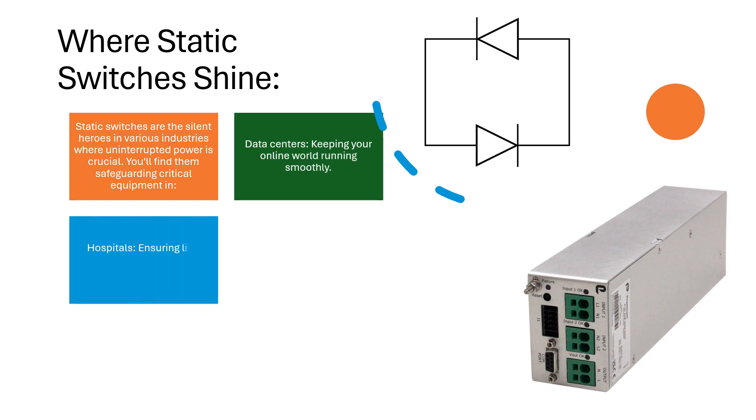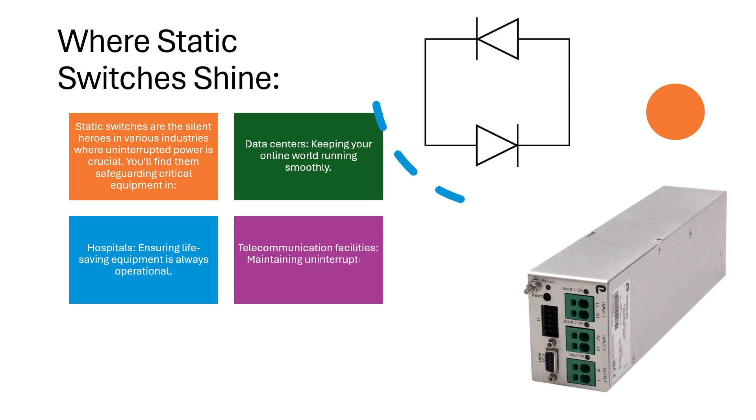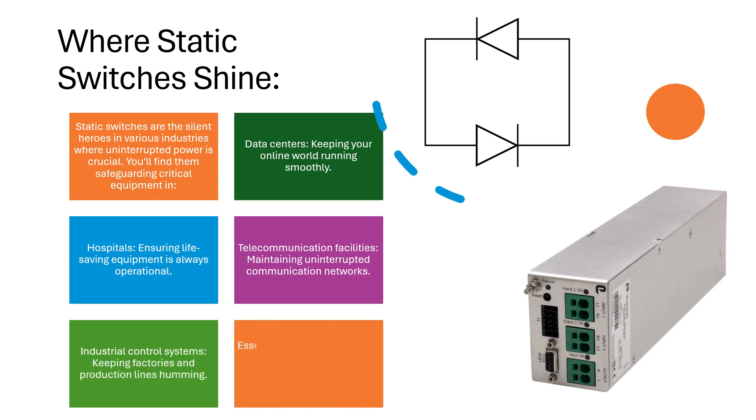Hospitals, ensuring life-saving equipment is always operational. Telecommunication facilities, maintaining uninterrupted communication networks. Industrial control systems, keeping factories and production lines humming. Essentially, anywhere a power interruption can cause significant downtime or data loss.